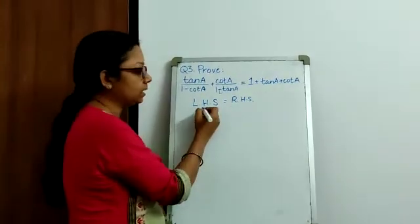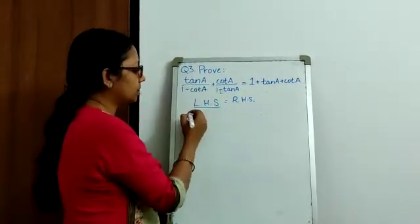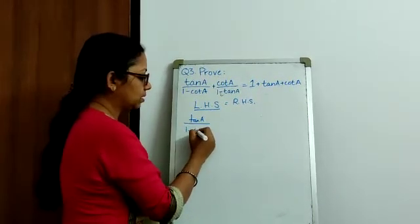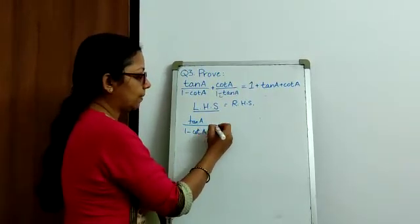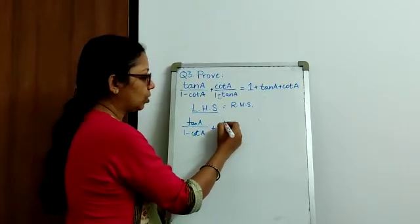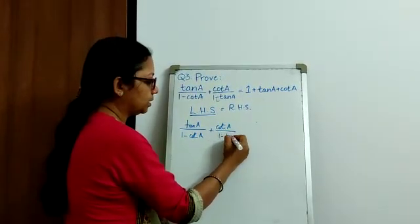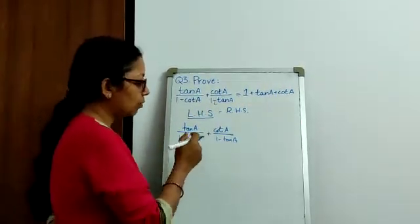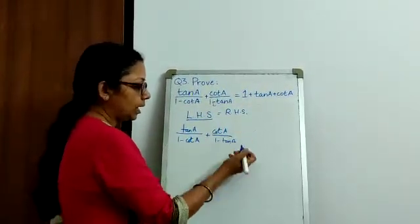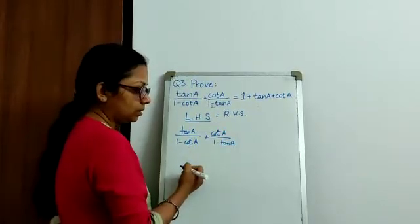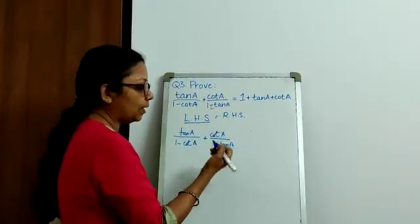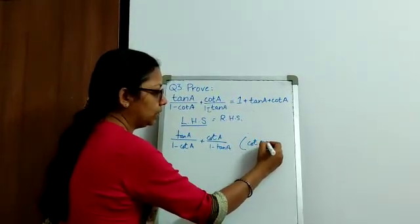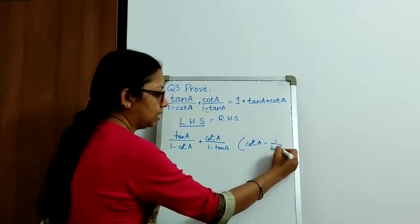So, let us take the LHS part which is tan A by 1 minus cot A plus cot A by 1 minus tan A. In the first expression, we are going to replace cot A by 1 by tan A.